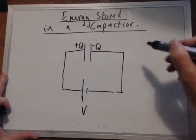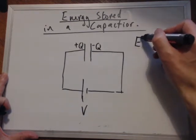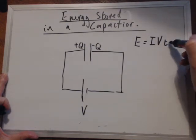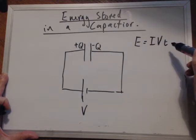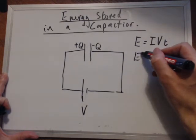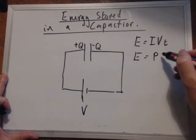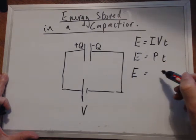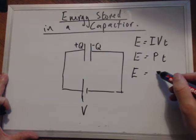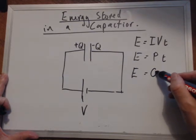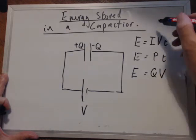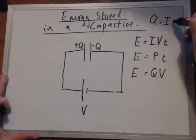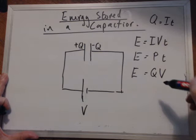Now some equations for electrical energy are: energy, electrical energy is equal to IVt, that's one, so electrical energy equals current times voltage times time. Another one is electrical energy is equal to power times time, IV is power. They're all the same really. And another one is electrical energy is equal to charge times voltage, which is Q times V. And charge is simply equal to Q is equal to It. So current is the rate of charge. So they're all the same equations.